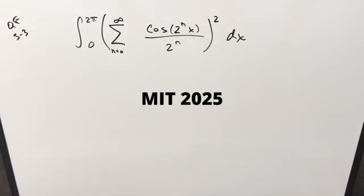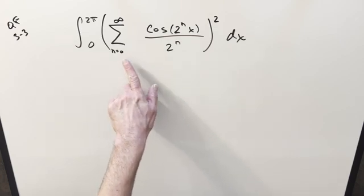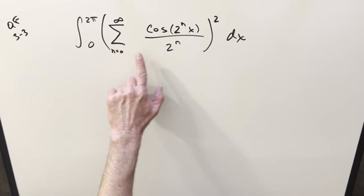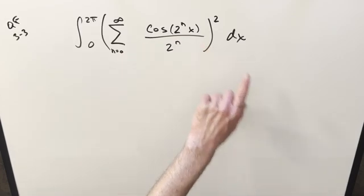Okay, we have here a good one from MIT 2025 quarterfinals round three problem two. We have the integral from zero to 2π of this sum with cosine in it, but the whole infinite sum is going to be squared dx.